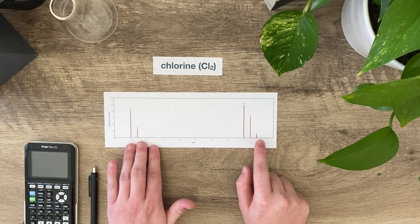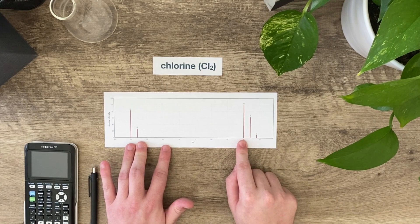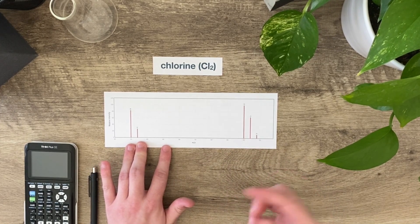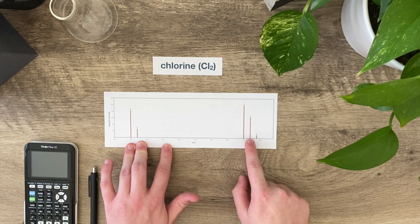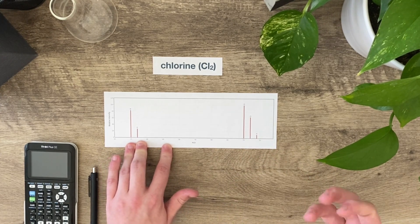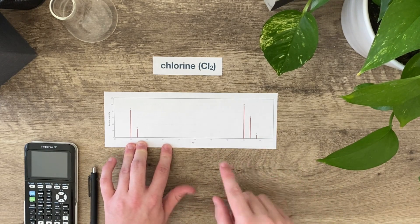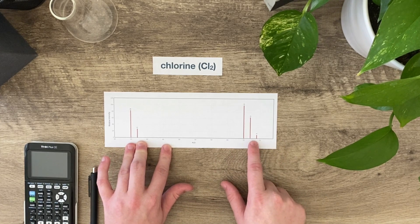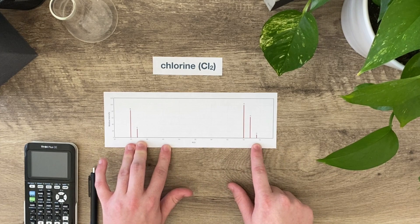If both of the chlorines in the molecule are 35, then I get a peak of 70 exactly, which makes sense because it's the one that's higher in abundance. If I get a sample of chlorine, most of them are going to be Cl-35, which means they have a mass of 35. But some of the molecules might have a mass of 35 and a mass of 37, or they might have two Cl-37s, which is even lower probability of that occurring.